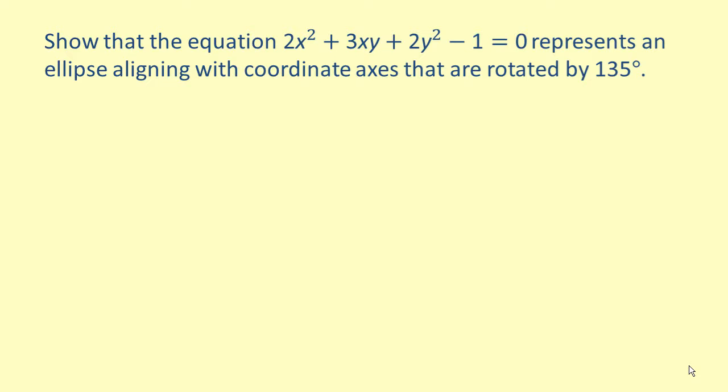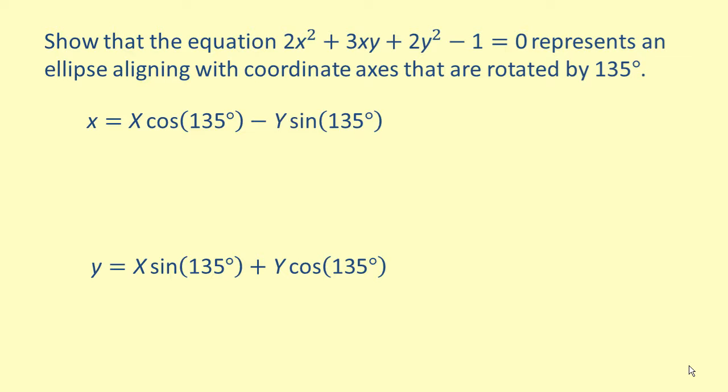Now let's try an example. Show that the equation 2x squared plus 3xy plus 2y squared minus 1 equals 0 represents an ellipse aligning with coordinate axes that are rotated by 135 degrees. Start with the rotation formulas, substituting 135 degrees for theta, to get x equals capital X times cosine of 135 degrees minus capital Y times sine of 135 degrees, and y equals capital X times sine of 135 degrees plus capital Y times cosine of 135 degrees.